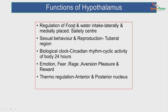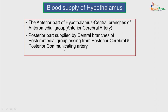Thermoregulation — the rise in body temperature, hypothermia and hyperthermia — is controlled by the anterior and posterior nuclei of the hypothalamus. Overall, all the functions of the body are controlled by the hypothalamus. Regarding blood supply, the hypothalamus is supplied by the anterior cerebral artery, the middle cerebral artery and the posterior cerebral artery, which give central branches, cortical branches and choroidal branches. The anterior part is supplied by the central branches of the anterior medial group of the anterior cerebral artery, whereas the posterior part is supplied by the central branches of the posterior medial group from the posterior cerebral and posterior communicating arteries.